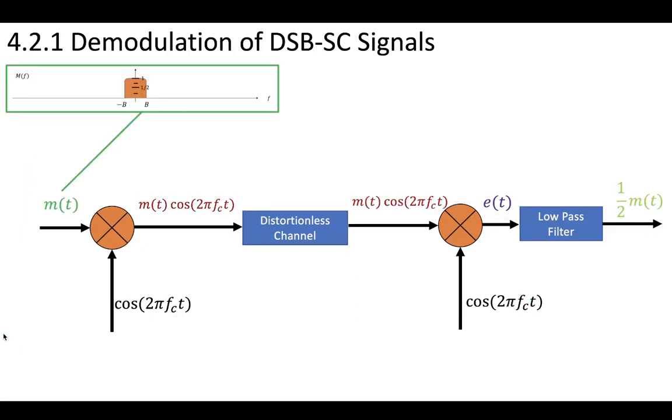So looking at this, first we have our message contained within this bandwidth, minus b to b. It does not contain our frequency, fc. It has a height of one.